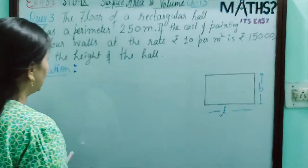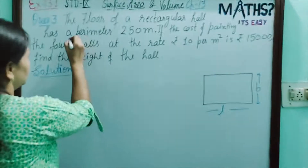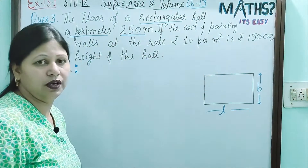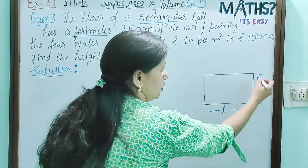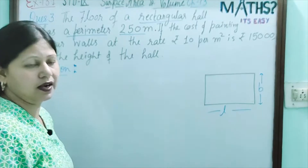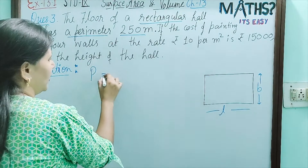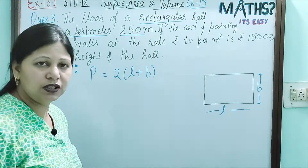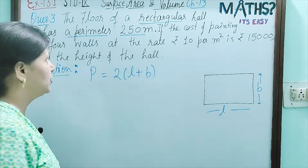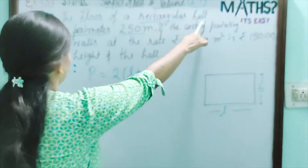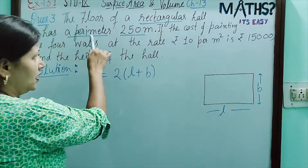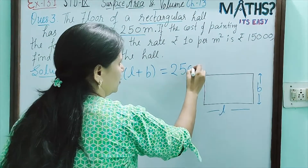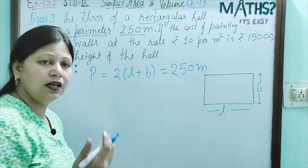As you know, the floor is given as rectangular. So, the perimeter of a rectangle is 2(L + B), which is given in the question. The floor of a rectangular hall has a perimeter of 250 metres, so this value is 250 metres.